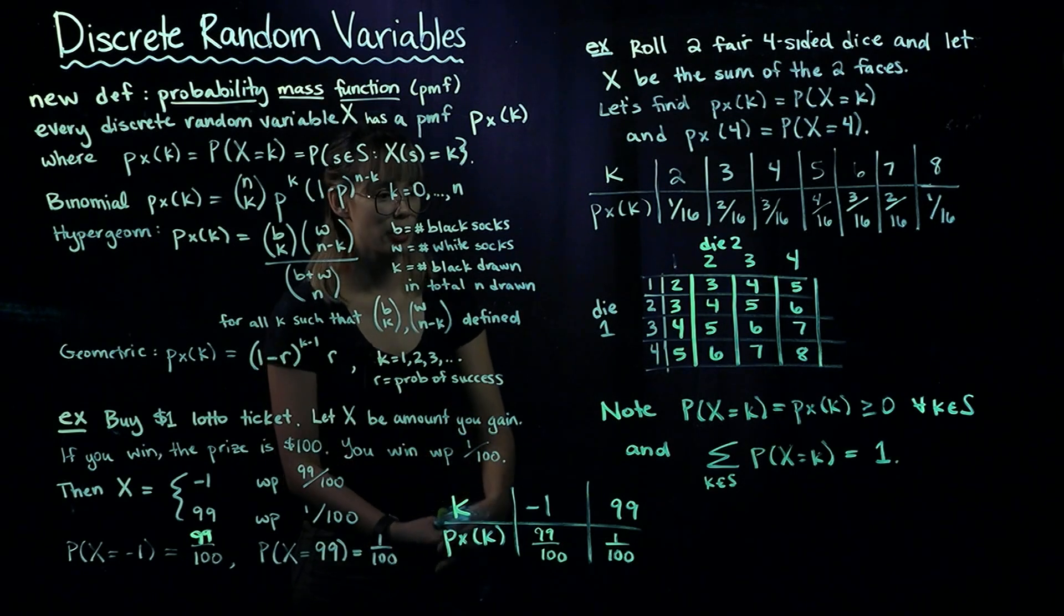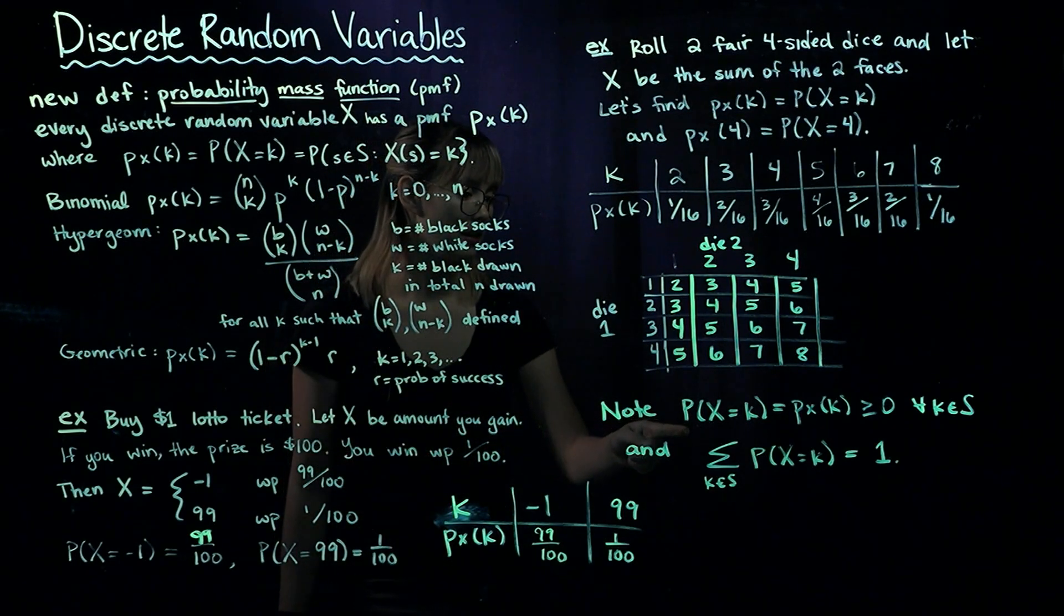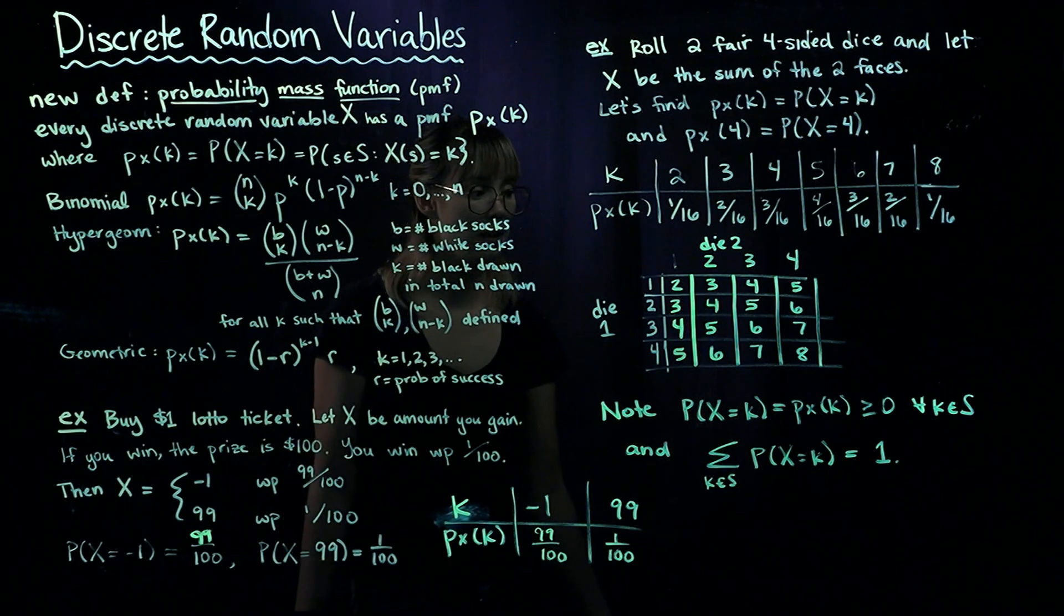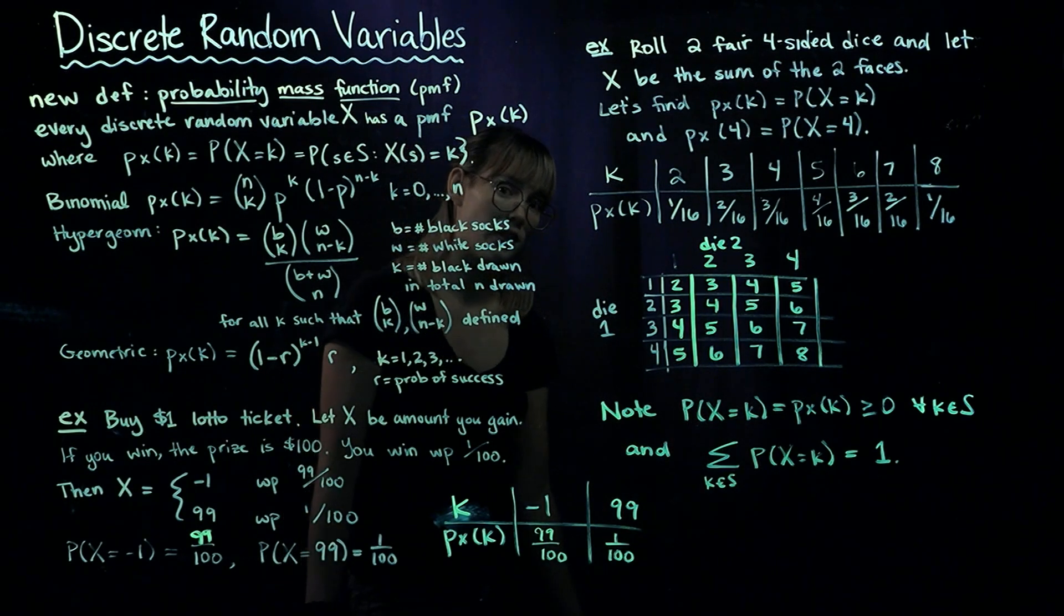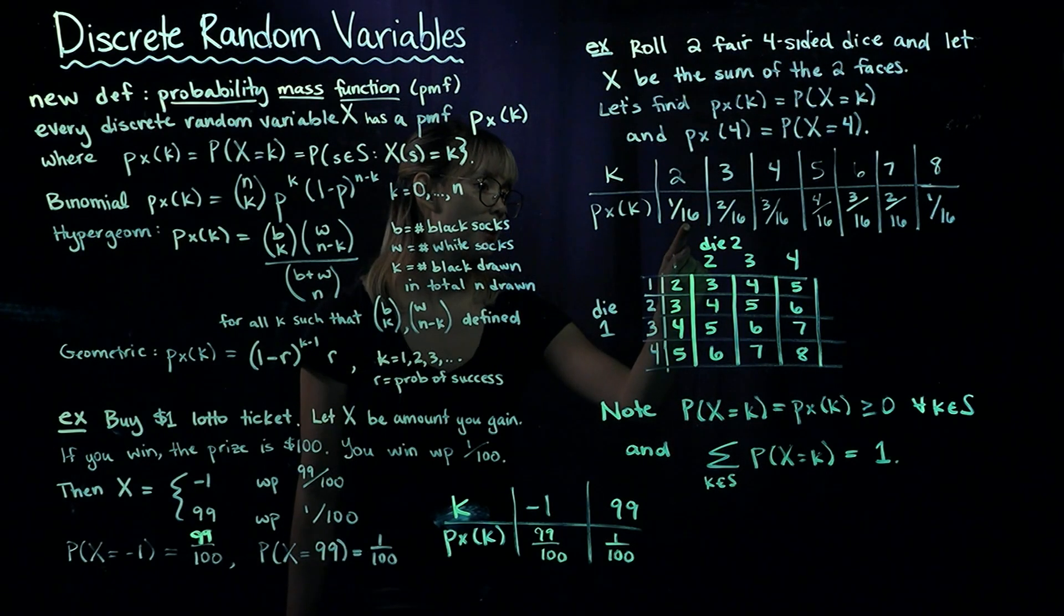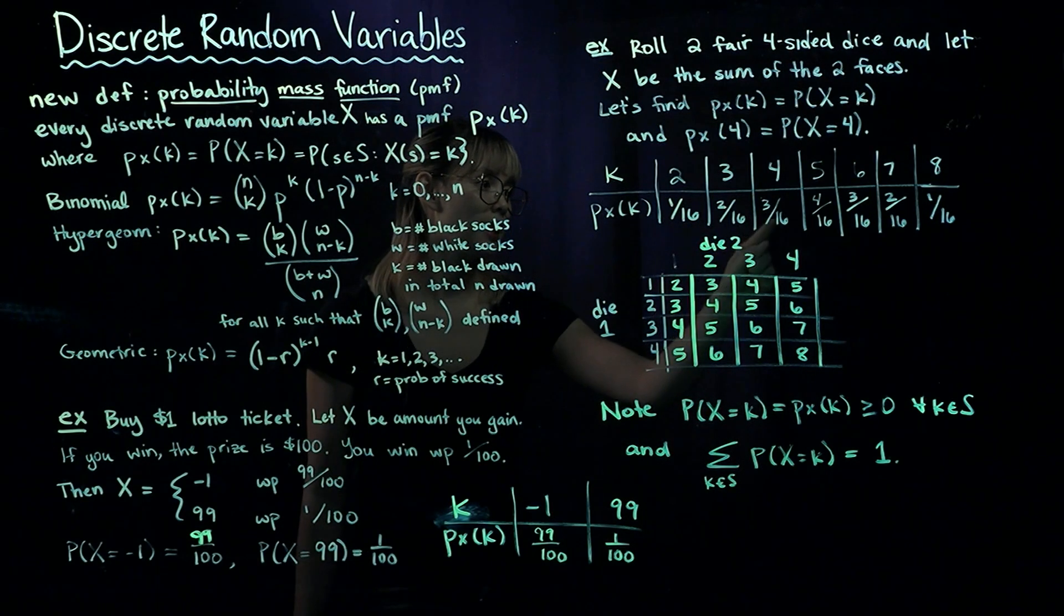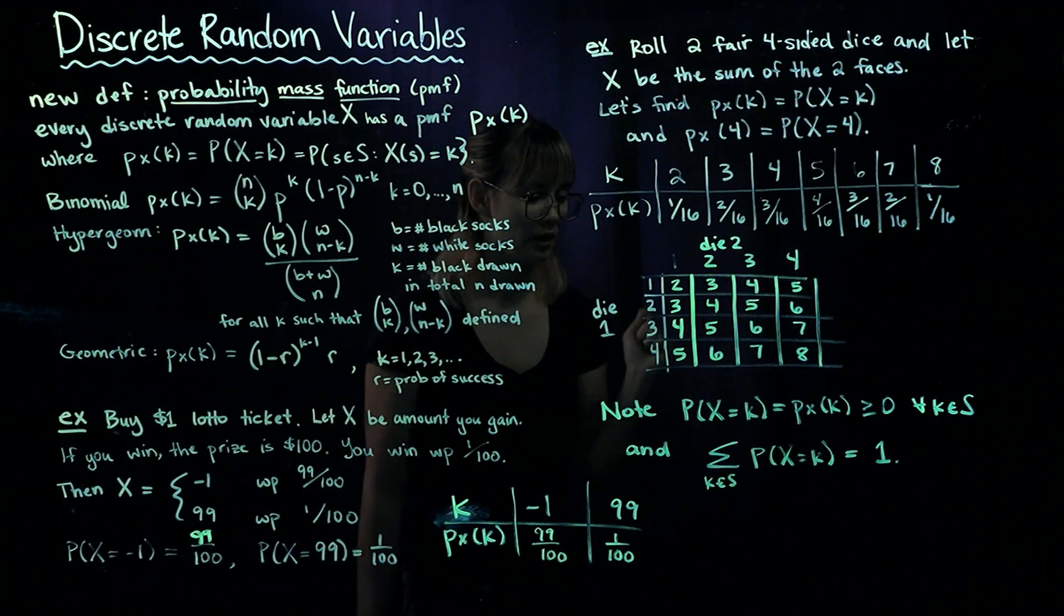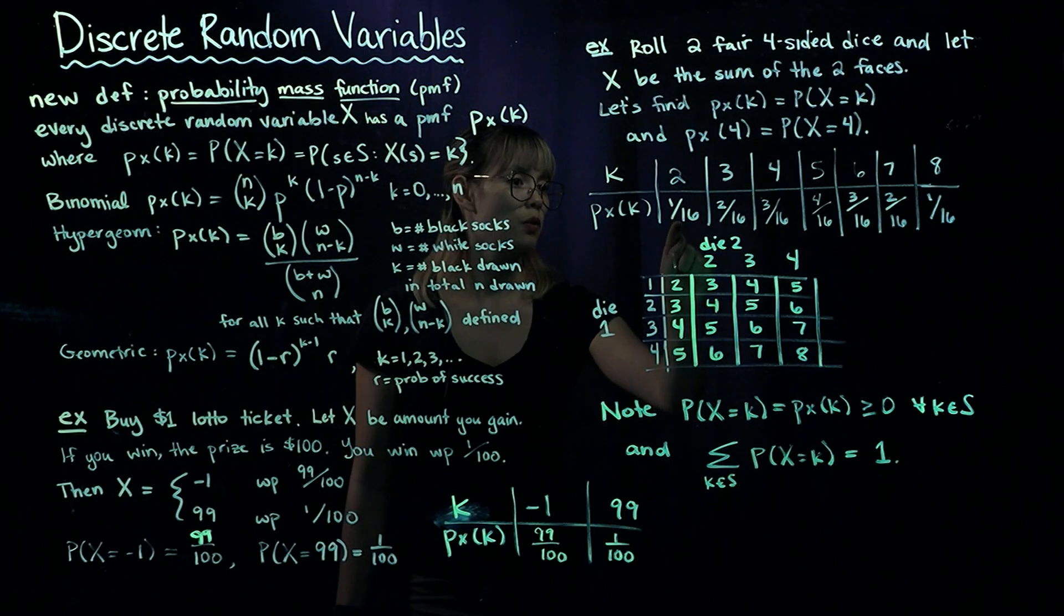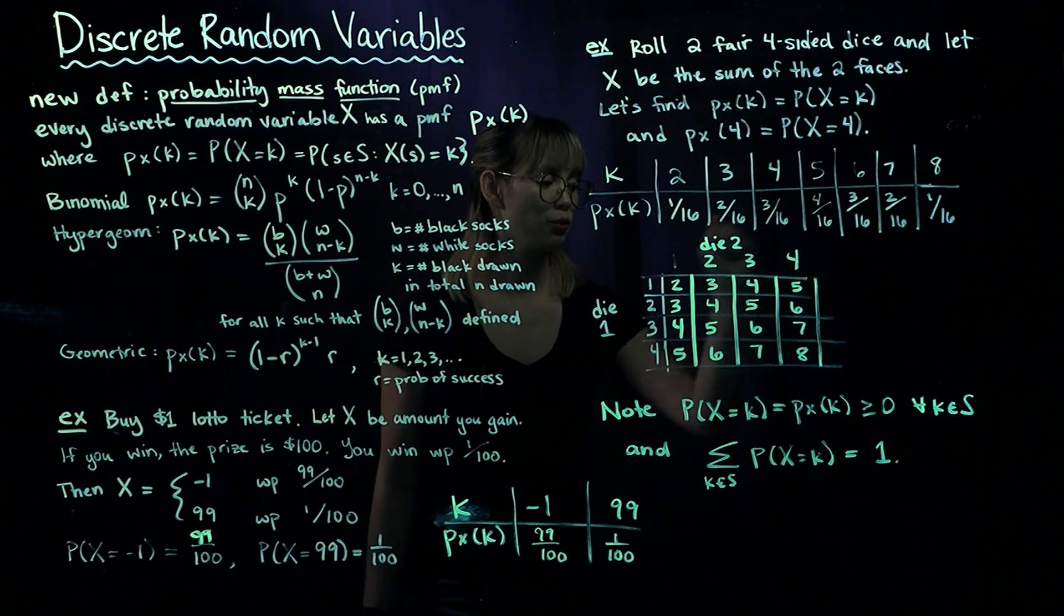We can note that the probability of X equaling some value K is greater than or equal to zero for every K in our sample space—all these probabilities are non-negative. Also, if we add up all the probabilities (1/16, 2/16, 3/16, etc.), we get 1.